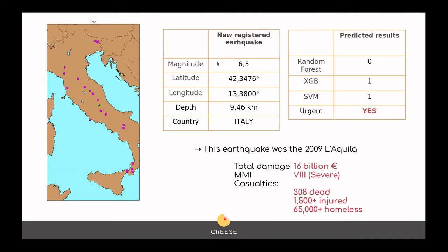As an example, we show how this microservice works. Once a new earthquake is detected by the USES for earthquakes workflow, this information is automatically processed and passed through the machine learning models to predict by a voting system if it is urgent or not. In this case, our models predict that it is urgent — and indeed it was. This is the 2009 L'Aquila event, which produced a total damage of 16 billion euros and many casualties. We can conclude that our methodology can provide valuable information for decision makers to predict a very damaging earthquake.